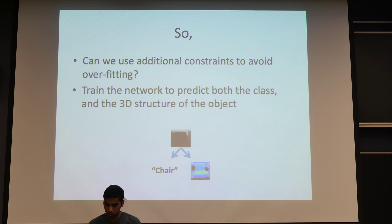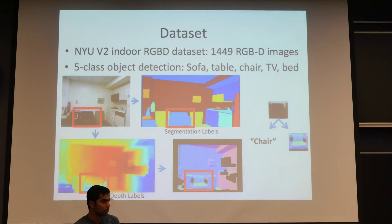To that end, what we tried was for every object, instead of just predicting what class it is, we also try to predict the surface normals for that object. We hope that using this additional constraint, the lower layers of the network will learn a better representation that will be better both for classification as well as for the surface normal prediction.